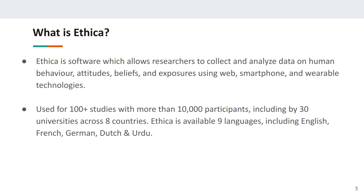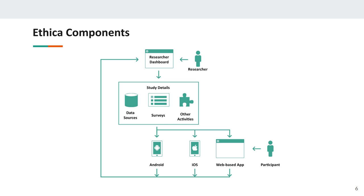Ethica has been used worldwide for more than 100 studies with more than 10,000 participants across a wide variety of universities, including particularly large numbers in the U.S., Canada, Australia, and now Europe. It is available in multiple languages, and there are particular study deployments in other languages — for example, in Bengali recently — where the surveys and interface buttons are localized even if the system menus aren't.